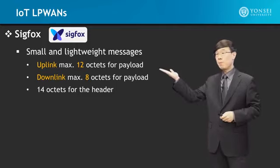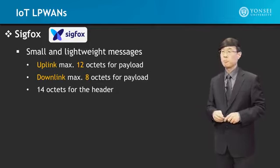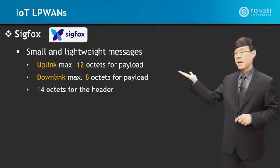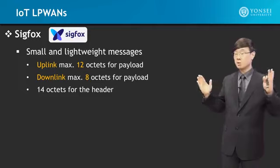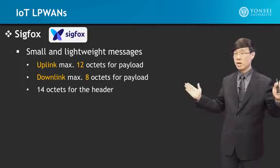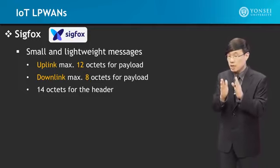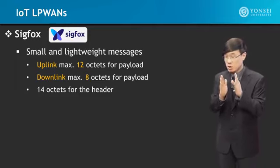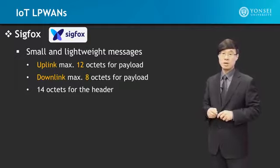Packet sizes are limited to 12 octets, which is 12 bytes, and that is for the payload, meaning that the overall packet is going to be larger. However, the information you can put into a packet — which is the payload — is limited to 12 octets in size.